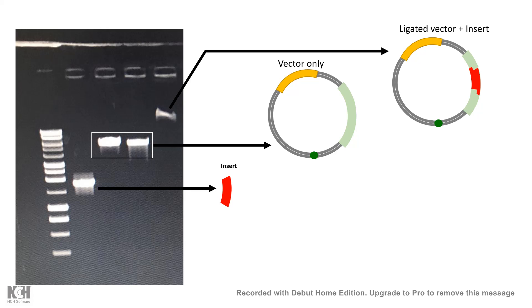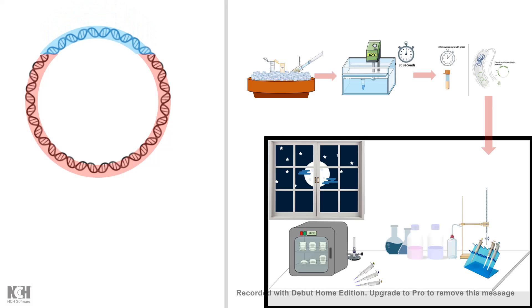See the last lane where the recombinant plasmid has the insert inside the vector. That recombinant vector can now be distinguished in agarose gel electrophoresis.